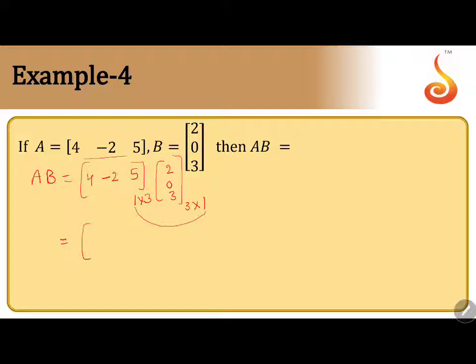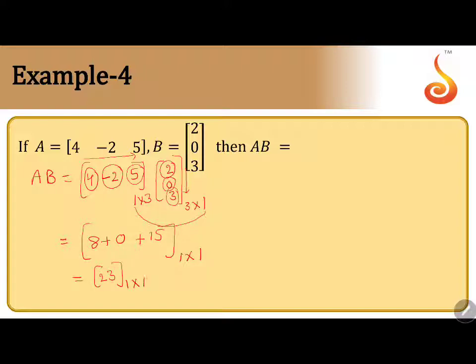We take rows from the first matrix and columns from the second matrix. We have only one row in the first matrix and one column in the second matrix. Multiply the corresponding elements and add: 4 into 2 is 8, minus 2 into 0 is 0, plus 5 into 3 is 15. So 8 plus 15 equals 23. It is a 1 by 1 matrix. Before finding the product, you should know the order of the product — then it is easy to calculate.